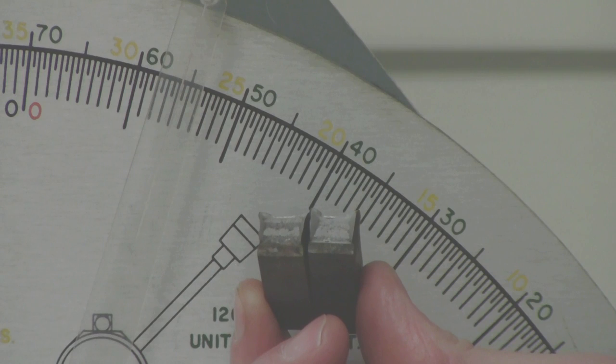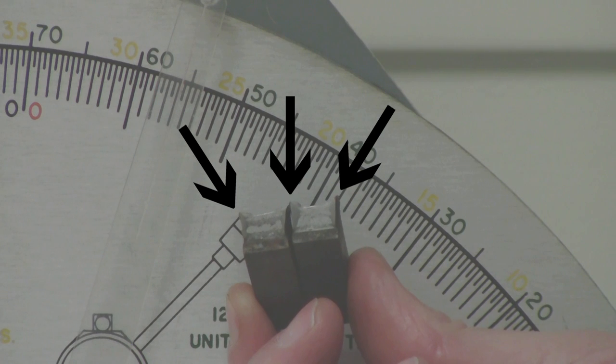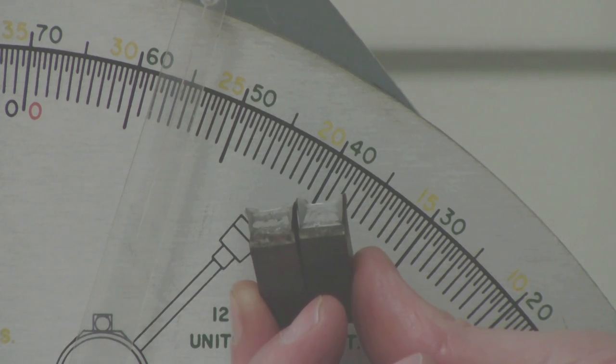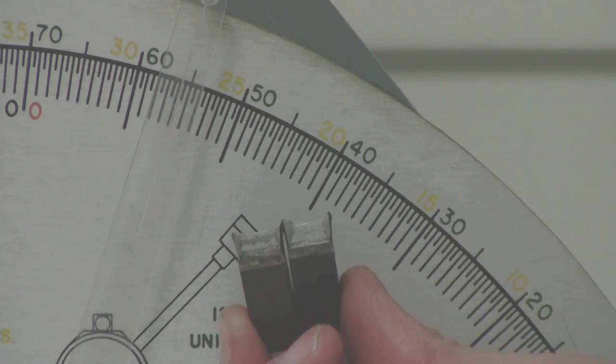So here we have the result of the ductile sample. You can see how the surface of the sample looks as though the sample has been ripped. And we see that it absorbed around 28 foot pounds of energy. So this ductile failure, this ripping of the metal, this is how we want our metals to perform.